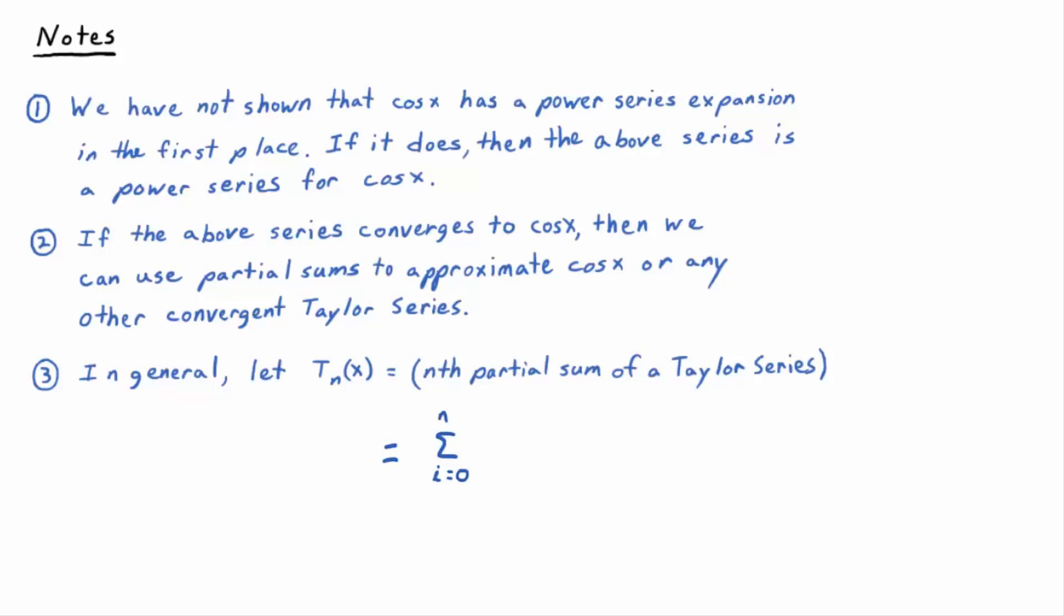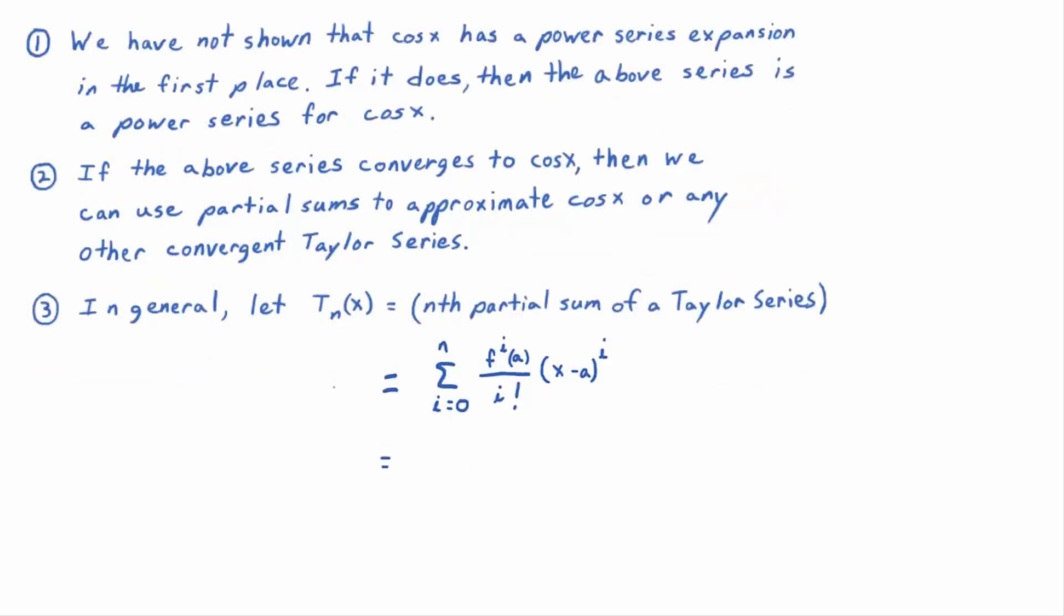So what is the Taylor series if you don't let it go to infinity? Well, the formula doesn't change, right? It would be the ith derivative evaluated at a, divided by i factorial instead of n factorial, times (x - a) to the i. I realize that looks strange, but if you think about it and write it out longhand, it's just a polynomial of degree n.